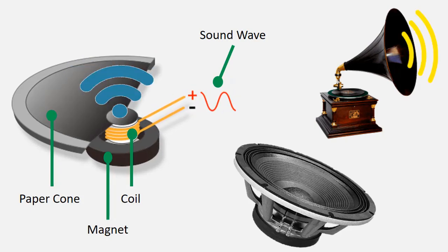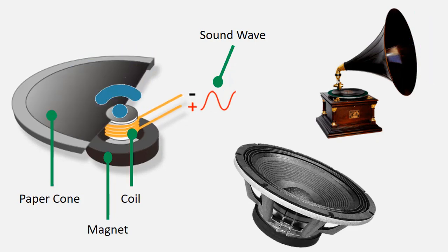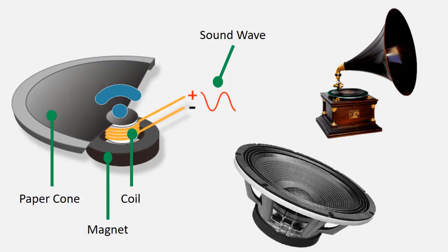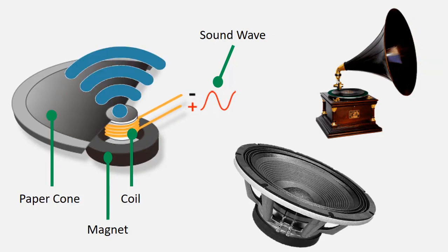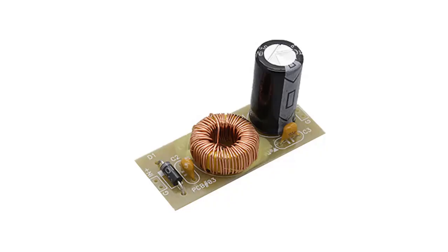Speakers are also one of the coil-use devices. Thanks to the magnet and coil structure inside, the sound waves are amplified and become audible. In a Tesla coil, a magnetic field is formed around the coil connected to the power source and, thanks to this magnetic field, the lamp brought close to the coil is illuminated wirelessly.